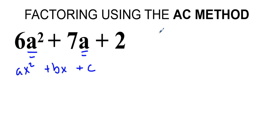In this case, we're going to take 6 and multiply that with 2. When we have that a and c, our values, we're going to multiply them together, and that's going to equal 12.